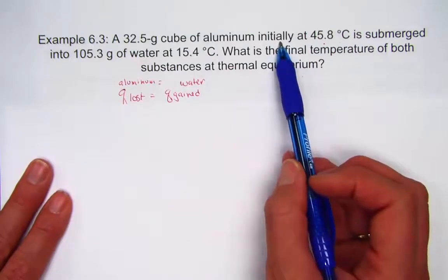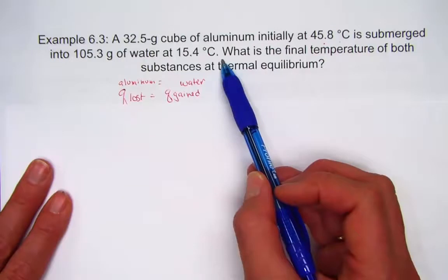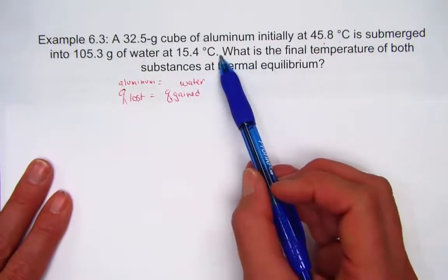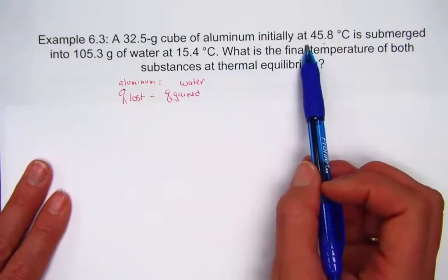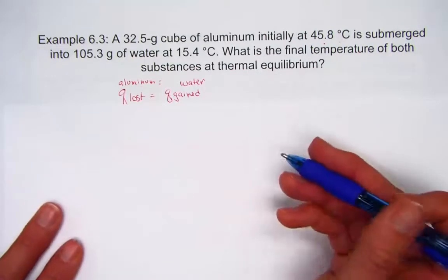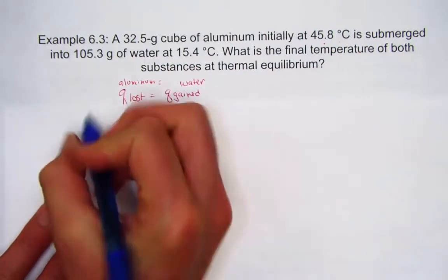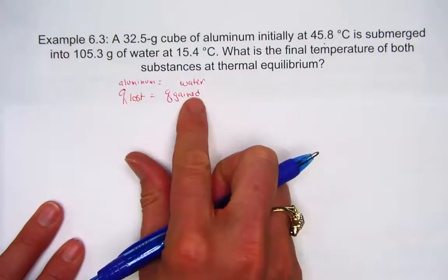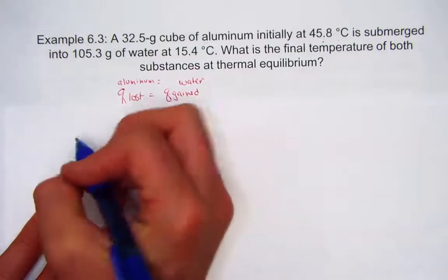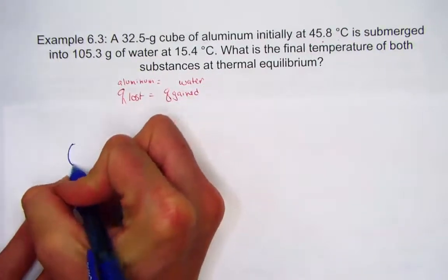The aluminum is hot, the water is cold. We're going to warm up the water but cool down the aluminum to reach the final temperature. We understand that heat lost from aluminum is heat gained by the water, and heat is found by calculating MC delta T.